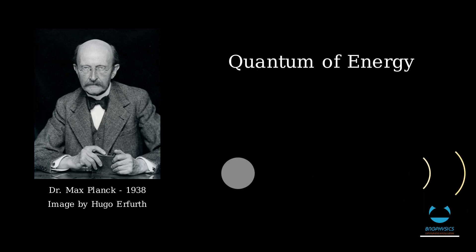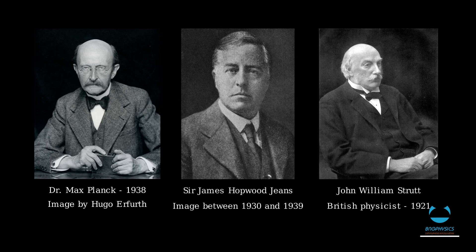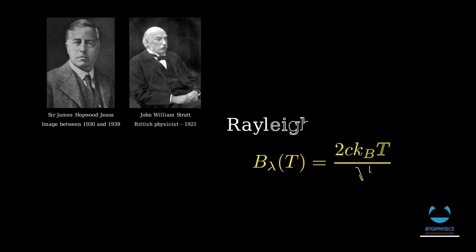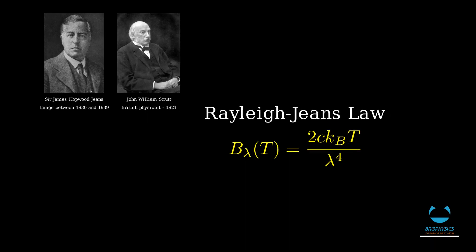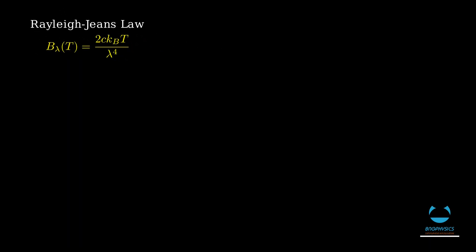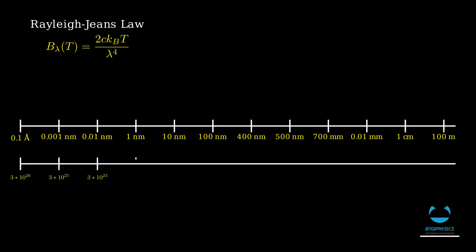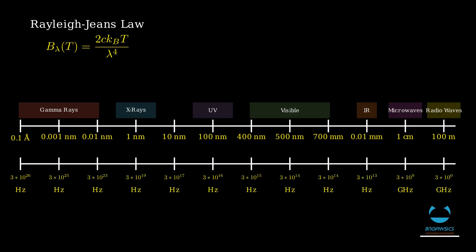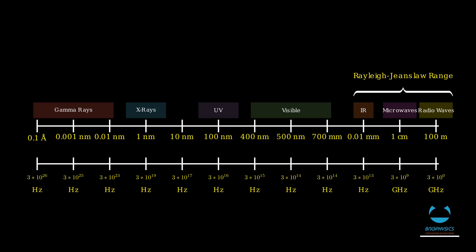Max Planck's breakthrough didn't come by coincidence, because prior to his findings, there were Lord Rayleigh and Sir James Jeans who introduced their law describing electromagnetic radiation made by a black body. But scientists noticed that Rayleigh-Jeans law and other classical theories were unable to accurately predict the amount of radiation a black body would produce at different wavelengths, particularly at shorter wavelengths or high frequencies.